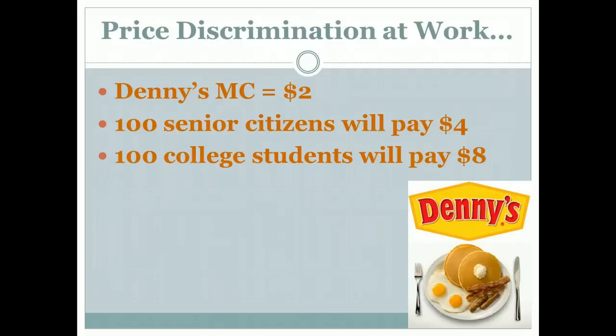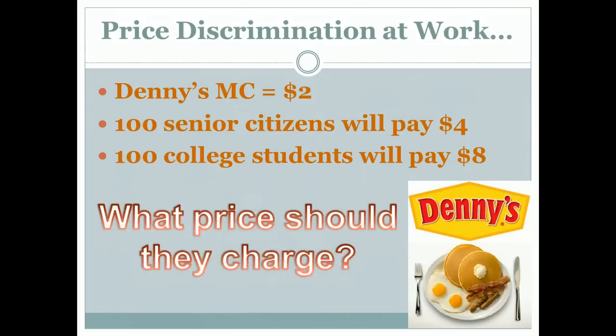Let's pretend for a minute that Denny's is a monopoly — that there's only one breakfast place in the town we're living in. We'll also assume that Denny's marginal cost per meal is $2, and that there are 100 senior citizens who are willing to pay $4 and 100 college students who are willing to pay $8 for their Grand Slam breakfast. So the question Denny's faces is: what price should they charge?